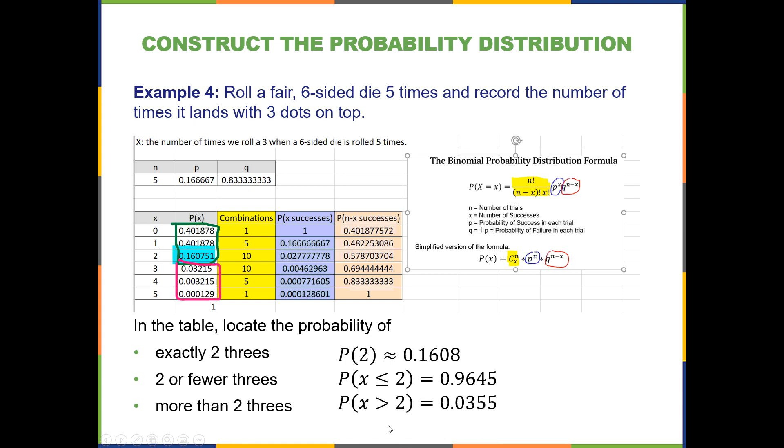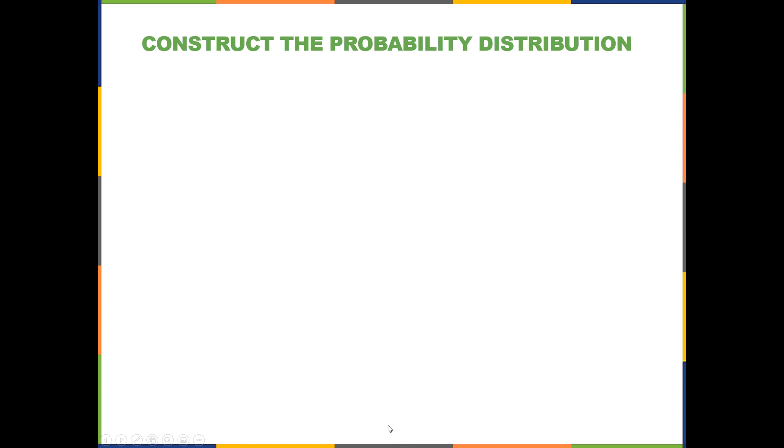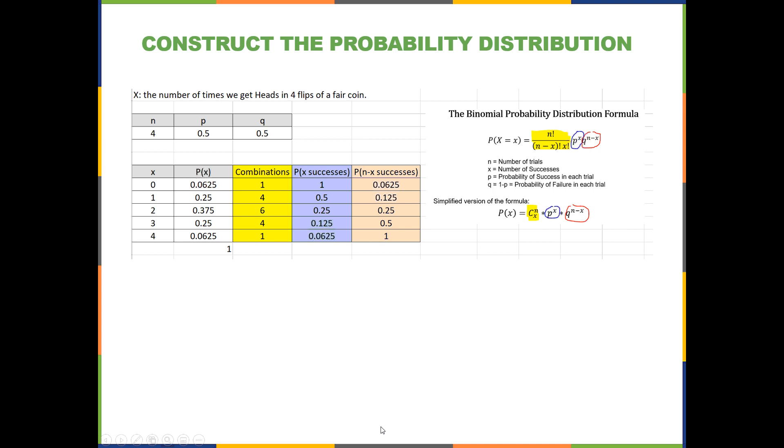Okay, let's look at another example. In another video, we'll actually walk through how to do the construction. So here's another one. And this random variable is the number of times we get heads in four flips of a fair coin. Okay, so in the table, let's locate the probability of exactly two heads. There you see it's 0.375. Two or fewer heads. Add these up and you get 0.6875.